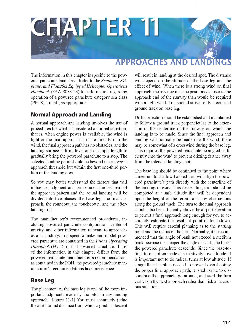Figure 11-1: You must accurately judge the altitude and distance from which a gradual descent will result in landing at the desired spot. The distance will depend on the altitude of the base leg and the effect of wind. When there is a strong wind on final approach, the base leg must be positioned closer to the approach end of the runway than would be required with a light wind.